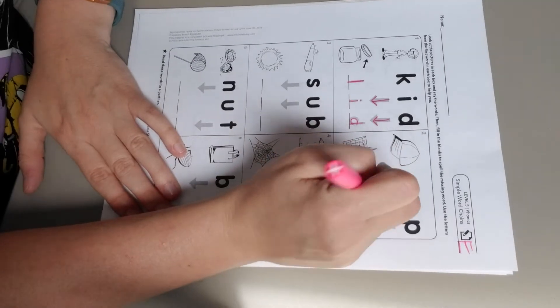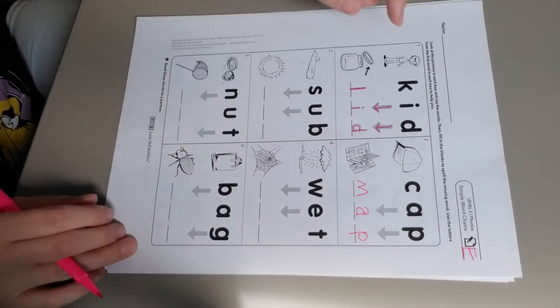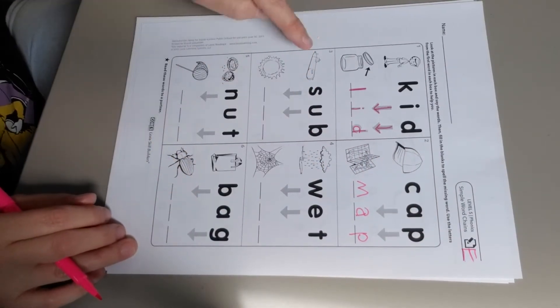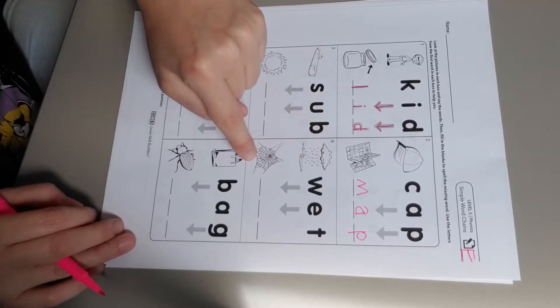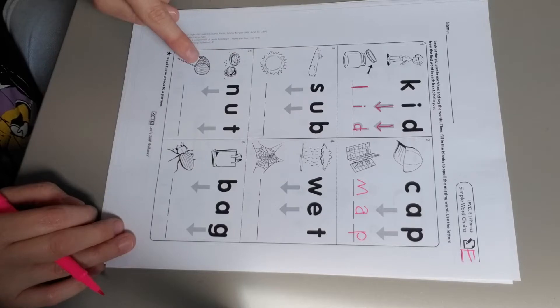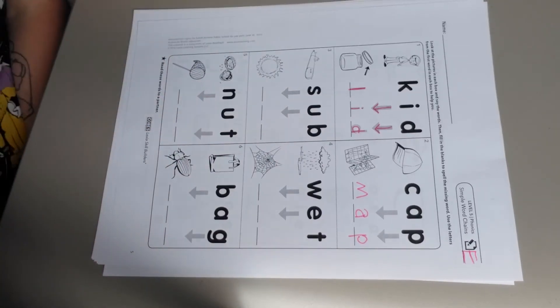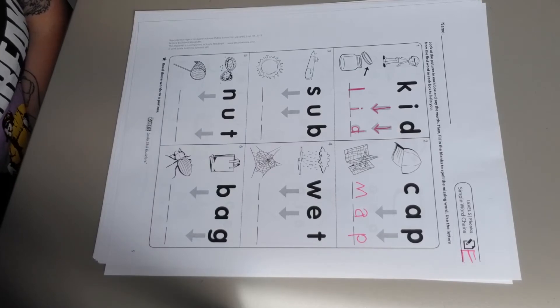Go ahead and finish the rest of these. You have sub to sun, wet to web, nut to net, bag to bug. When you finish with this, put your corrected work into the drawer, then you can move to Lexia, IXL, or Moby Max.